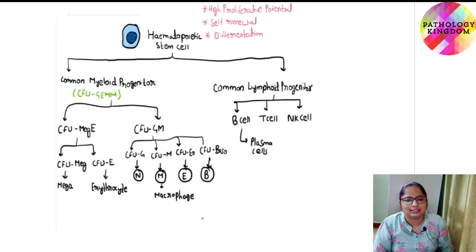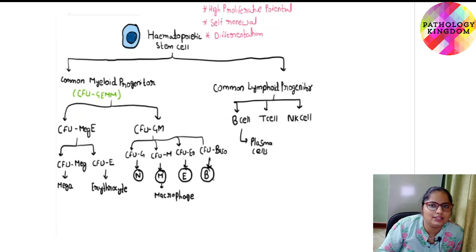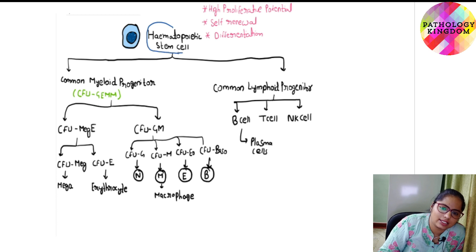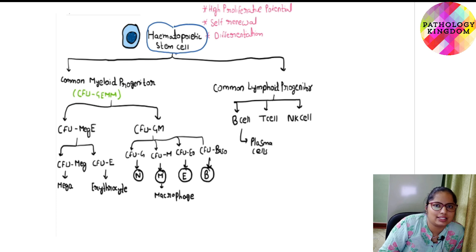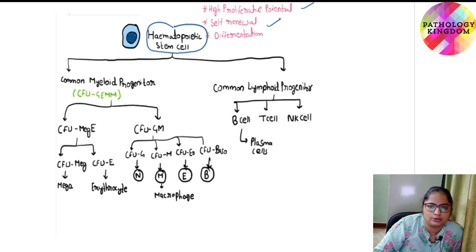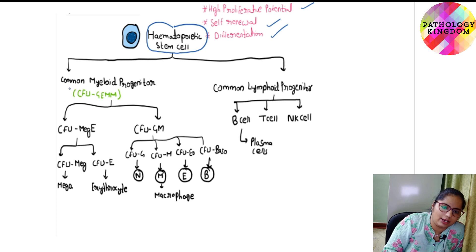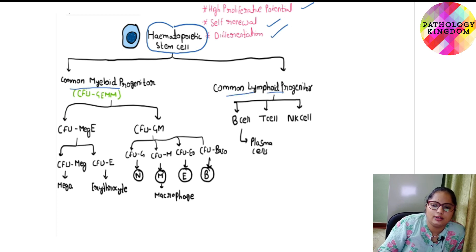This is an overview of how these mature cells develop. They originate from hematopoietic stem cells in the bone marrow. The hematopoietic stem cell is characterized by high proliferative potential, self-renewal, and differentiation. The hematopoietic stem cell gives rise to two progenitors: the common myeloid progenitor and the common lymphoid progenitor.